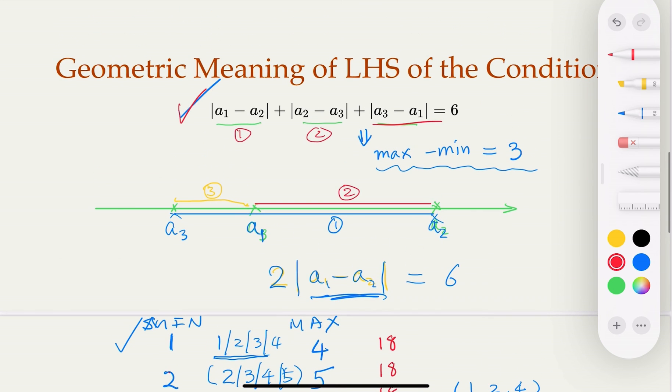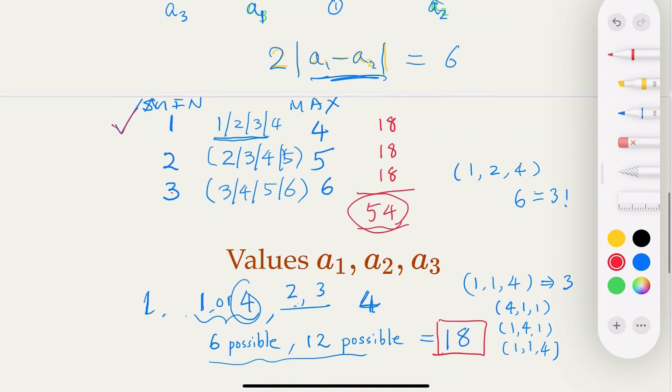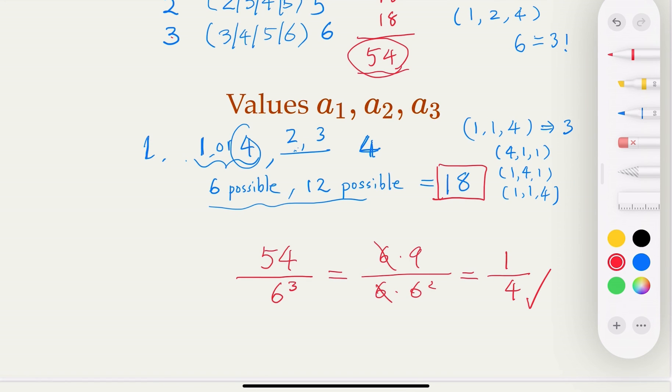So this problem is interesting. It's good to connect this problem with your algebra knowledge about absolute value, or sum of absolute values, and how to understand the geometric meaning of it. And then, once you know that the min and max must differ by three, then you can just do some enumeration of different cases, find out that there are actually 54 out of the total possible combinations, and then the probability is one-fourth. All right, so that's it for today. Hope you enjoyed it. Please leave comments if you would like to suggest any other topics. Thank you.